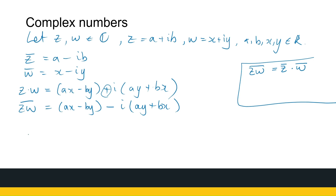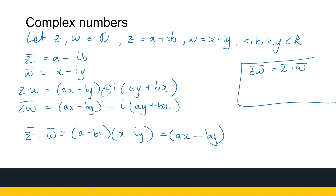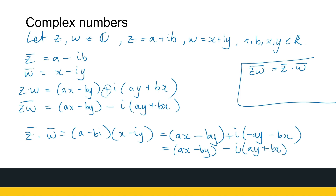Now let's look at conjugate of Z times conjugate of W: (A minus iB)(X minus iY). Multiplying out: AX, then minus iB times minus iY gives plus BYi², which becomes minus BY. For the imaginary part we get minus AY and minus BX, which is minus i(AY plus BX). That is the same as AX minus BY minus i(AY plus BX) — exactly what we had for the conjugate of ZW. So those two are equal, proving the property. There are many more theorems that can be proven — let me know if you need more proofs covered.